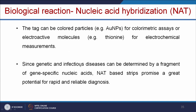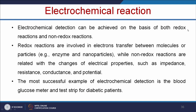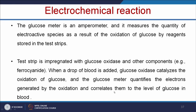Using NAT assays, we can easily identify genetic as well as infectious diseases. Electrochemical detection can be achieved on the basis of both redox and non-redox reactions. Redox reactions involve electron transfer between molecules or particles, while non-redox reactions are related to changes in electrical properties such as impedance or resistance. The most successful example of electrochemical detection is the blood glucose meter — an amperometer that measures the quantity of electroactive species resulting from oxidation of glucose by reagents in the test strip. The test strip is impregnated with glucose oxidase; when a drop of blood is added, glucose oxidase catalyzes glucose oxidation, and the meter quantifies the electrons generated and correlates them to the glucose level in the blood.